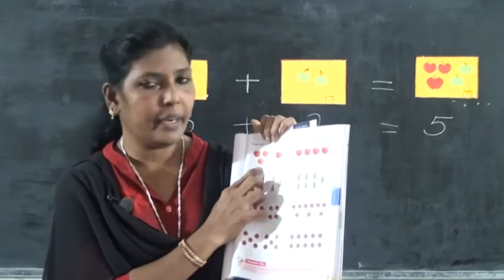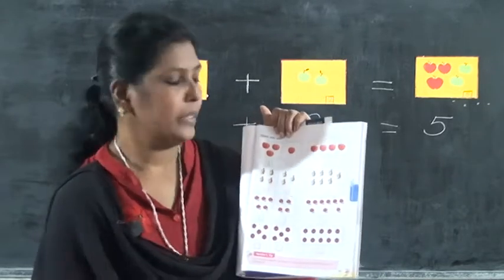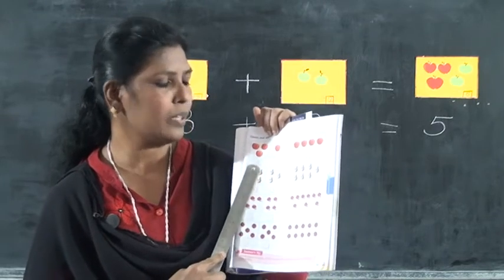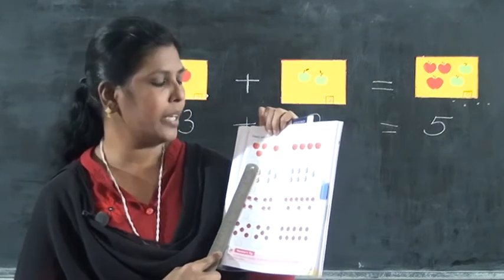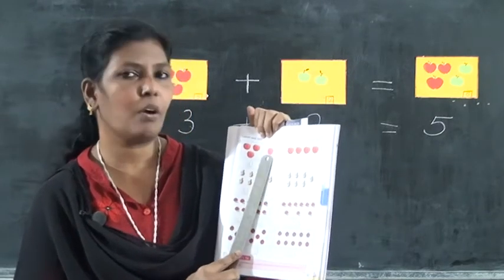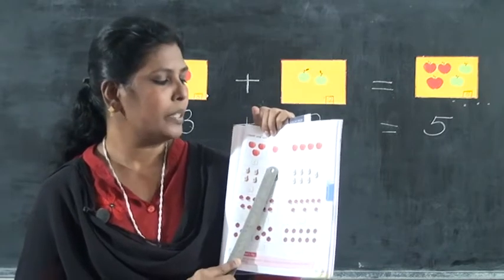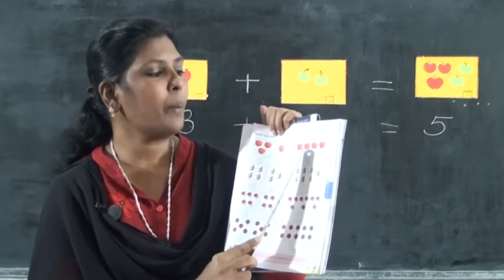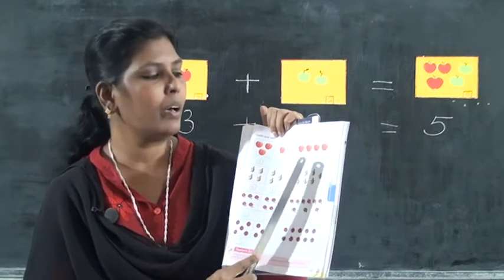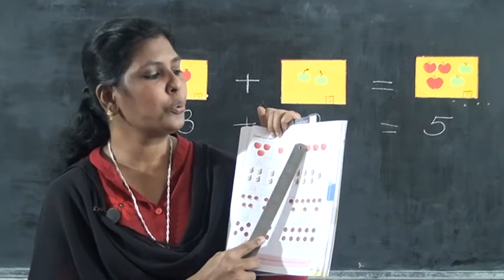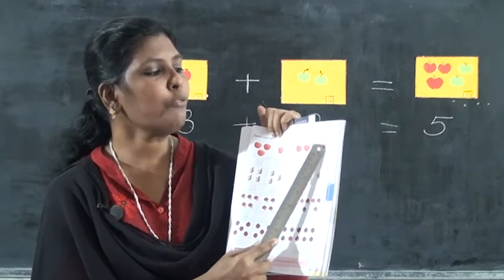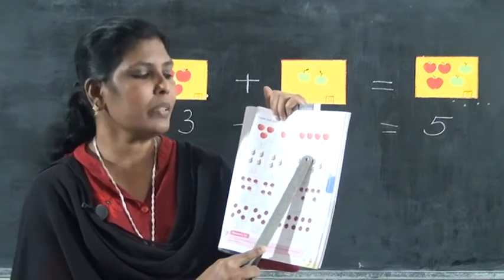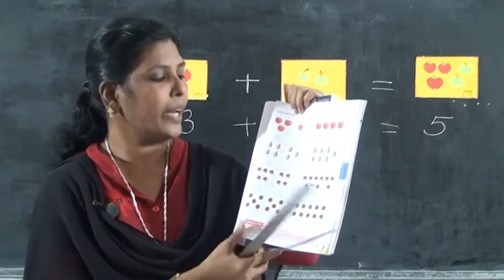How many apples here? Three apples. One, two, three. The number is already given. Then the next box has only one apple. The number is here. All together, how many apples? One, two, three, four. The number is given.